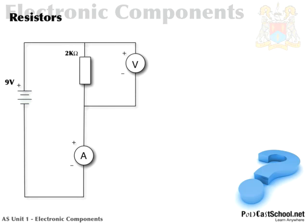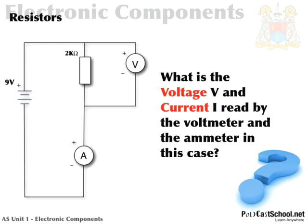Here's a question: what is the voltage V and the current I read by the voltmeter and the ammeter in this circuit? Remember this is the symbol for a voltmeter and this one for the ammeter. You can connect an ammeter either way round — there's no positive or negative. To work out the current, make I the subject: I equals V over R. V is 9, and R is 2,000 — not 2, that's a mistake you should not make. So it's 9 divided by 2,000, which gives 0.0045 or 4.5 milliamps.